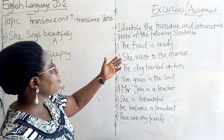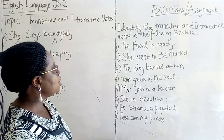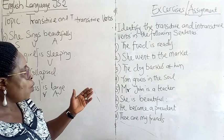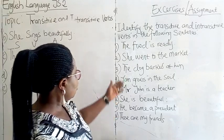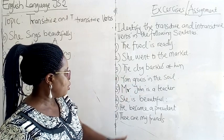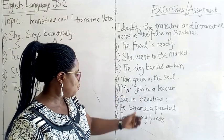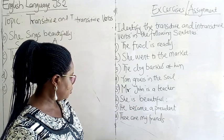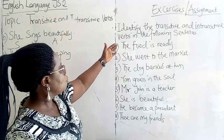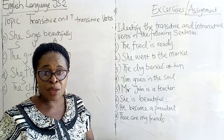Now let us look at the following exercises and assignments. Identify the transitive and intransitive verbs in the following sentences: 1. The food is ready. 2. She went to the market. 3. The dog barks at him. 4. Yam grows in the soil. 5. Mr. John is a teacher. 6. She is beautiful. 7. He became a president. 8. These are my friends. Let us do some of them together as a class exercise, then finish off the remaining ones as an assignment.